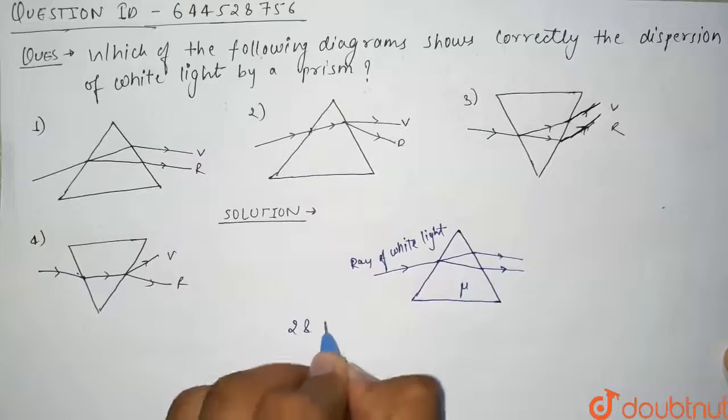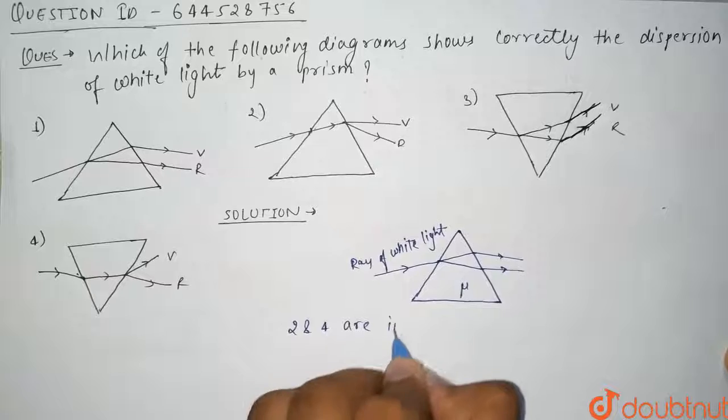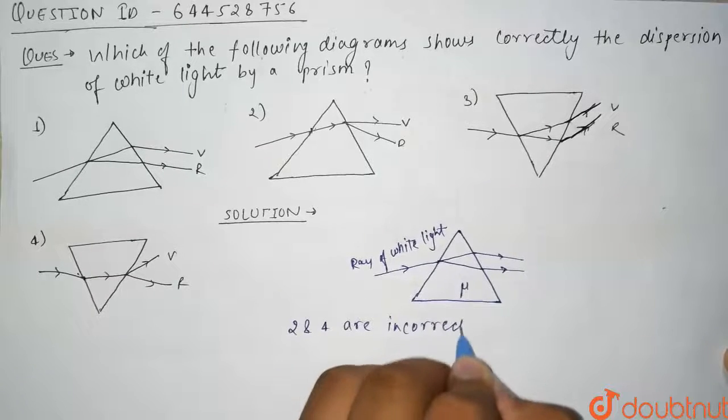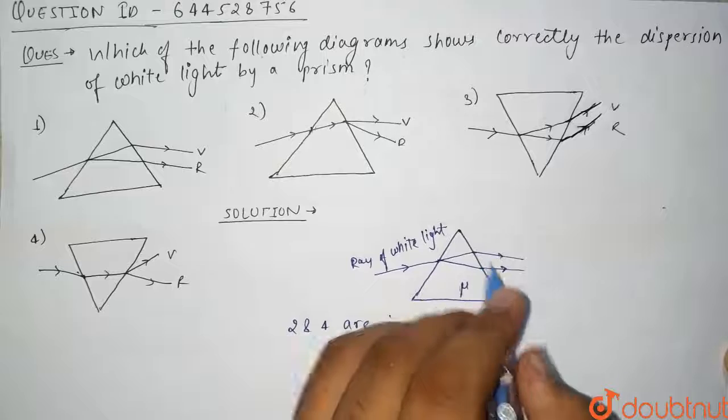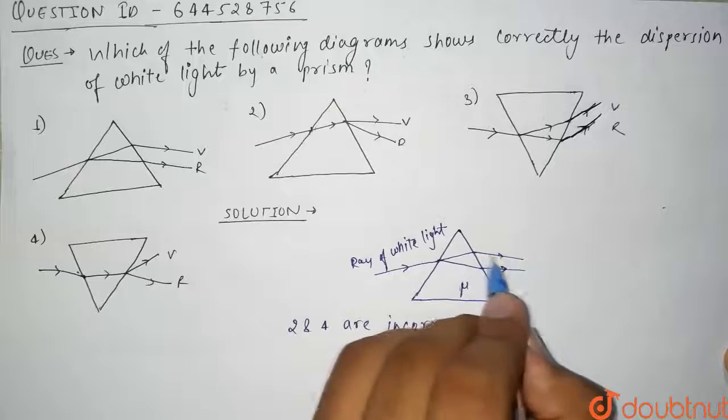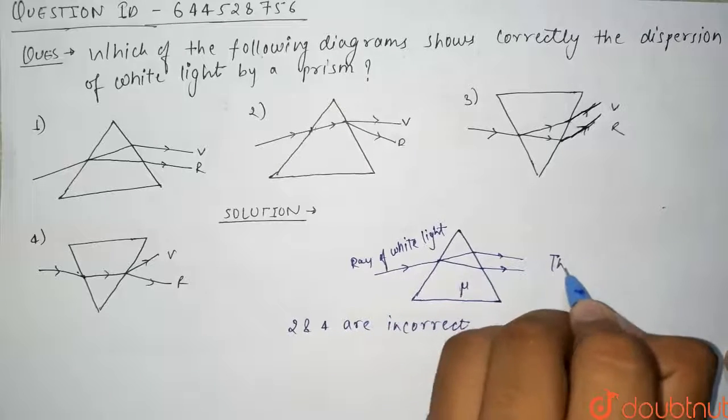Now see guys, since we know that the μ is different for different colors of light, so these angles, these rays, the emergent rays will be different for all...